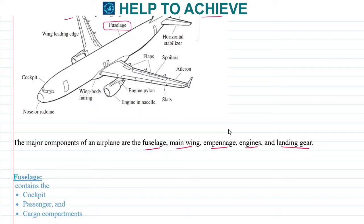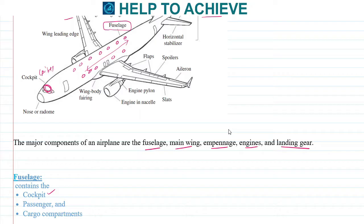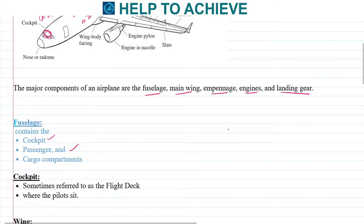The major components of an aeroplane are the fuselage, the wings, the empennage, the engines, and the landing gear. Starting with the fuselage — from the diagram we can see that the fuselage is nothing but the main body of the aircraft. It consists of the cockpit, the passenger sitting area, and the cargo compartments where passengers' luggage is kept.